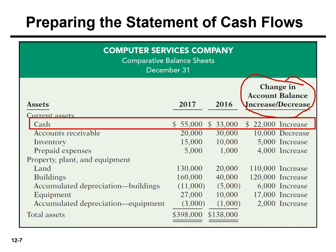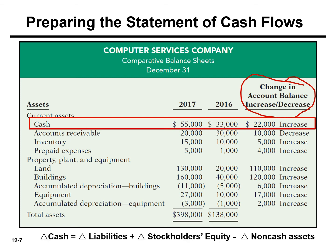When we prepare the statement of cash flows, we're relying on a simple manipulation of the balance sheet equation. Assets must equal liabilities plus stockholders' equity. We can manipulate that equation to say that the change in cash has to equal the change in liabilities plus the change in stockholders' equity minus any change in non-cash assets. As a result, any transaction that changes cash must be accompanied by a change in liabilities, stockholders' equity, or non-cash assets — and that's why we need a comparative balance sheet.